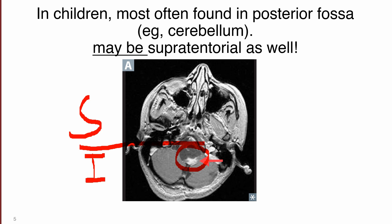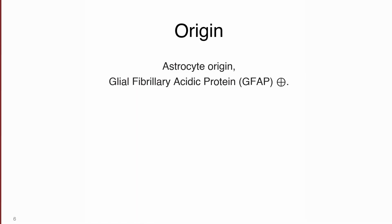In children, pilocytic astrocytoma is generally present in the cerebellum, whereas in adults the astrocytoma is generally present in the cerebrum. Regarding origin, these tumors are of astrocyte origin and are positive for GFAP — glial fibrillary acidic protein — which is an intermediate filament.